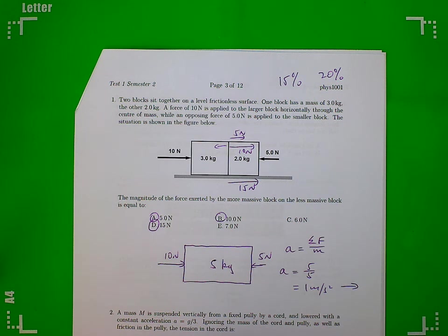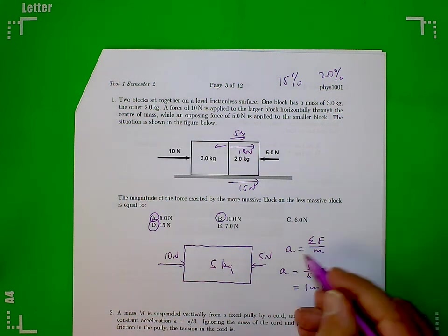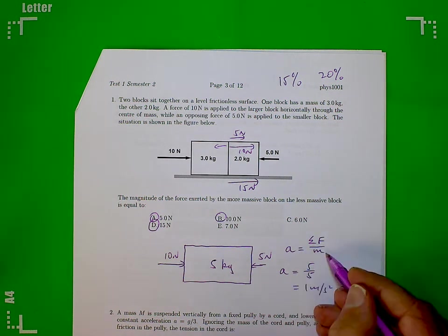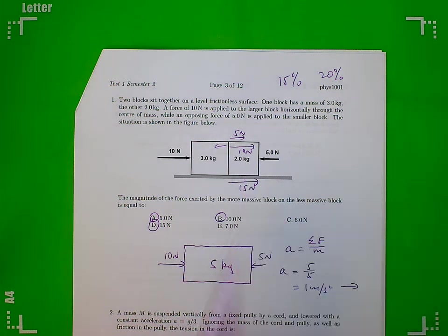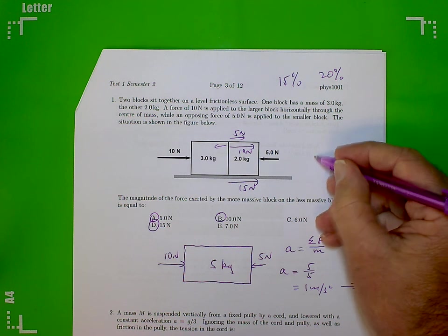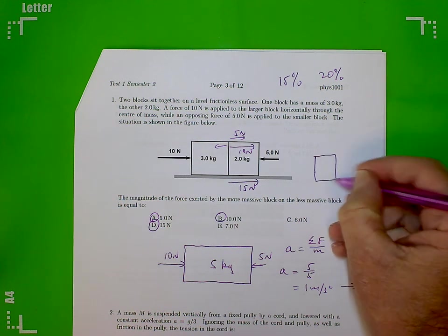All right, now this thing here, Newton's second law, not only does it apply to the whole lot but it applies to each block individually. So if we consider just the 2 kilogram block on its own, there it is.